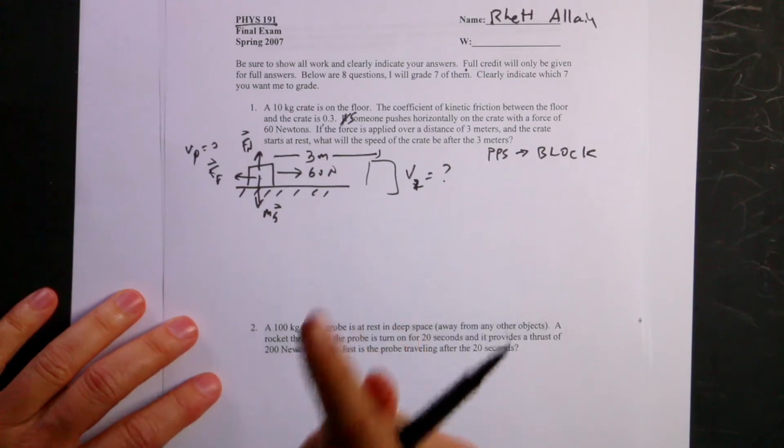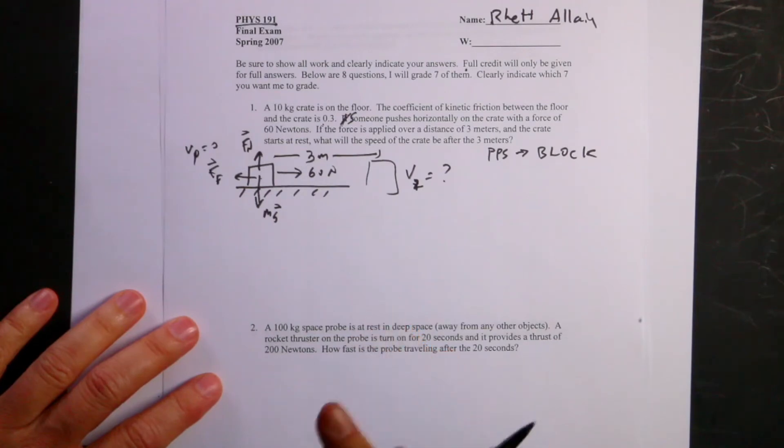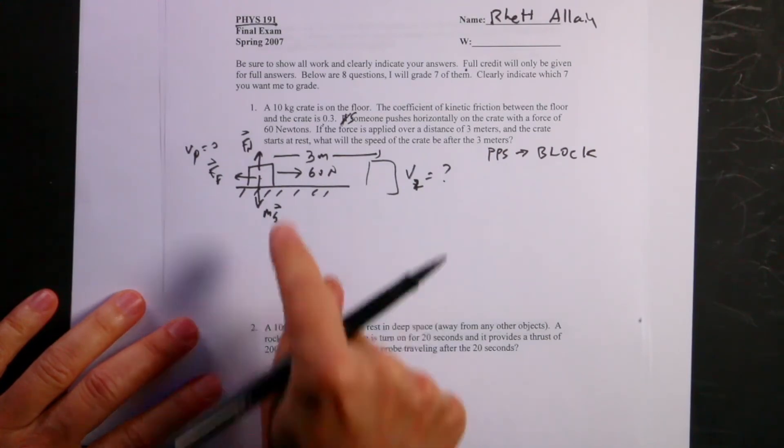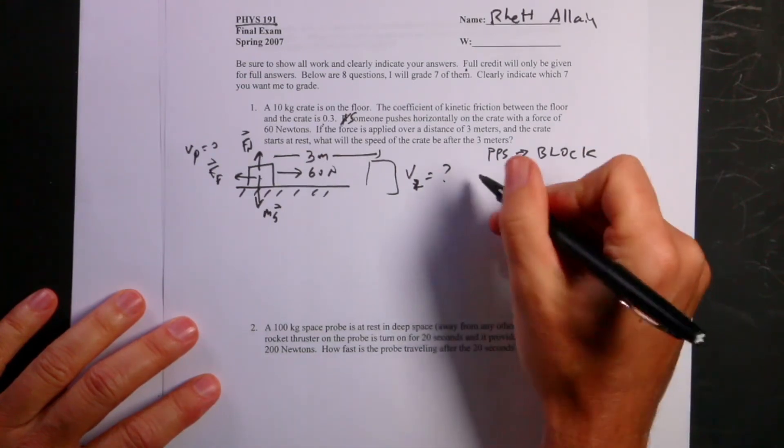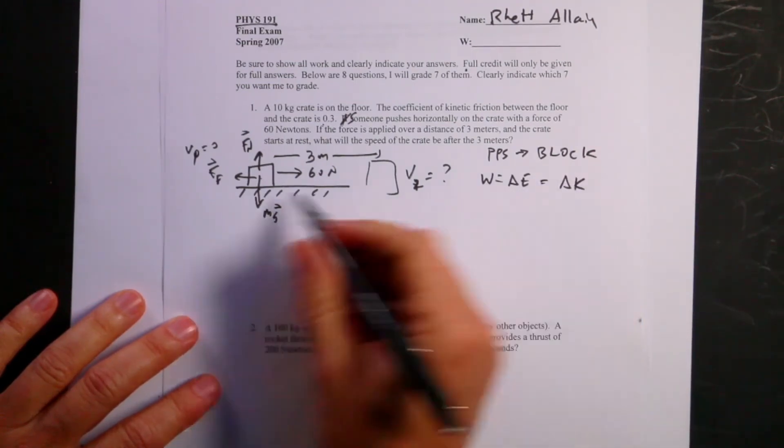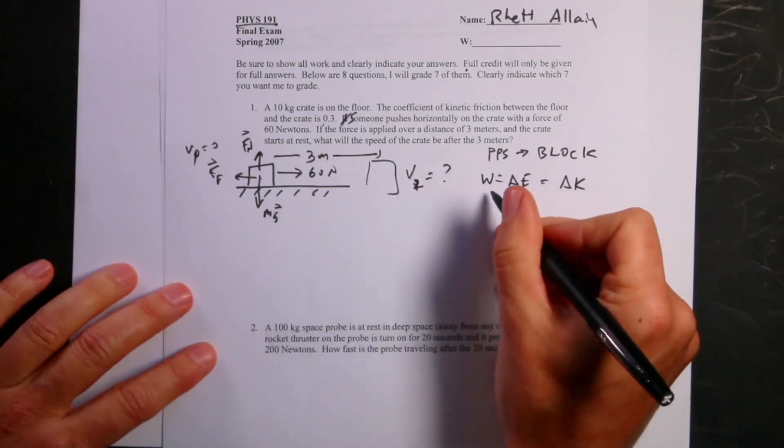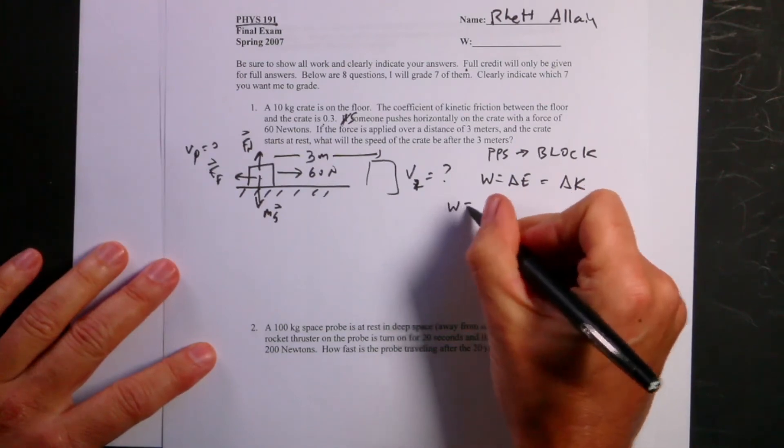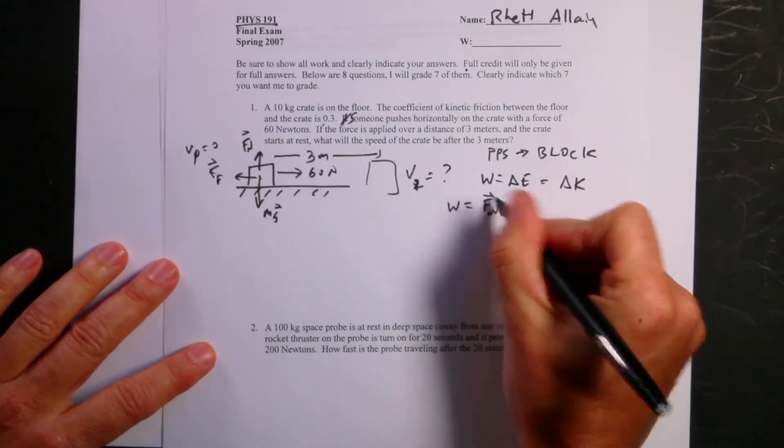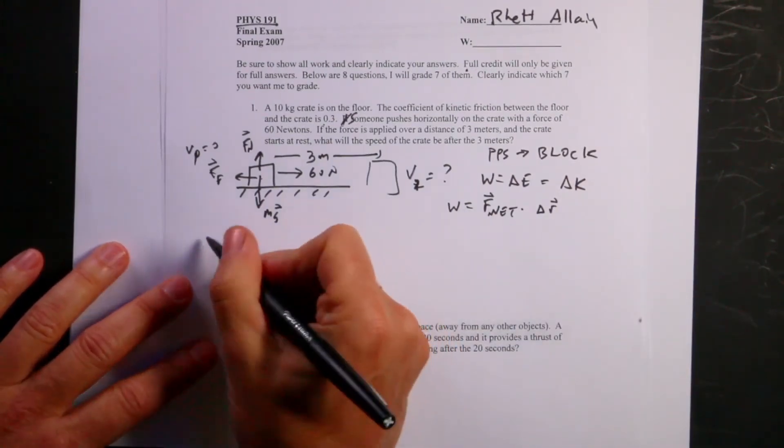Let's just use a point particle system. The work is the change in energy, which is the change in kinetic energy. The work is going to be the work done by all the forces added up because there is no potential energy. This is going to be the equivalent of the work is the net force dot the displacement.